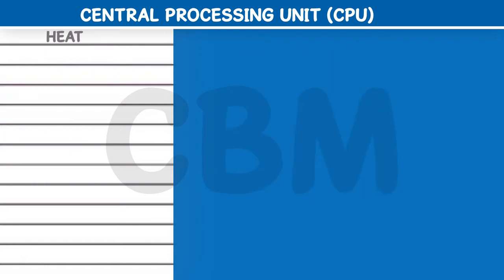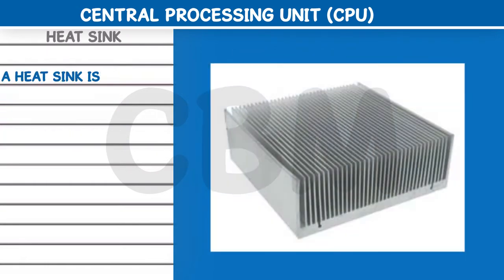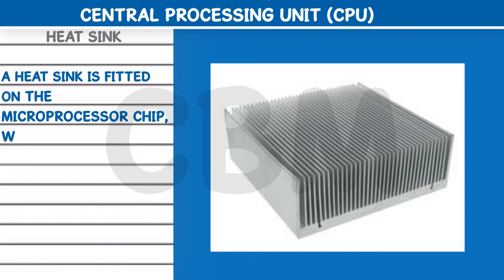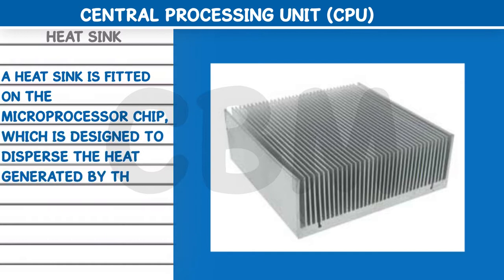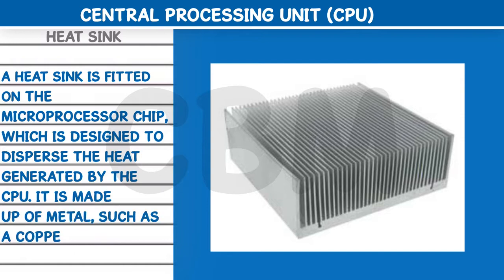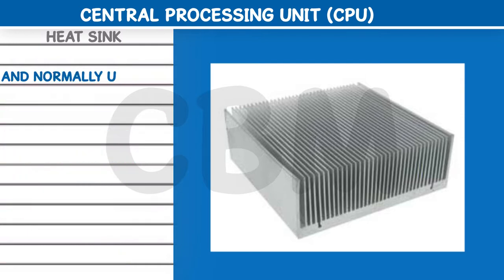Heat sink: a heat sink is fitted on the microprocessor chip, which is designed to disperse the heat generated by the CPU. It is made up of metal, such as copper or aluminum alloy, and normally uses a fan to keep the processor cool.